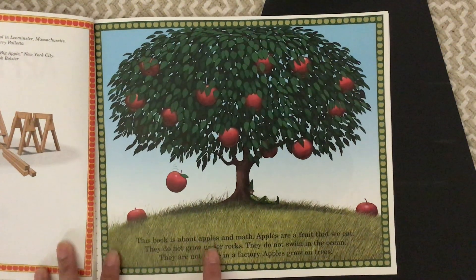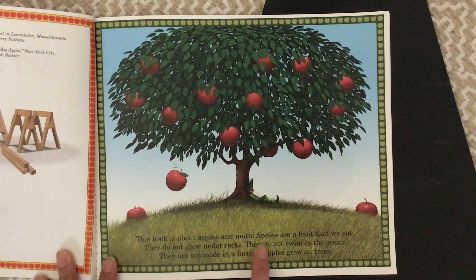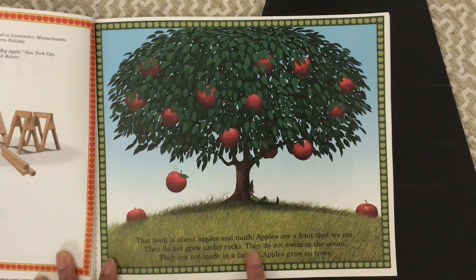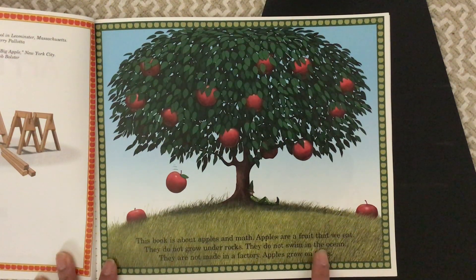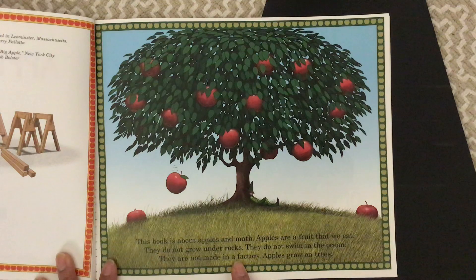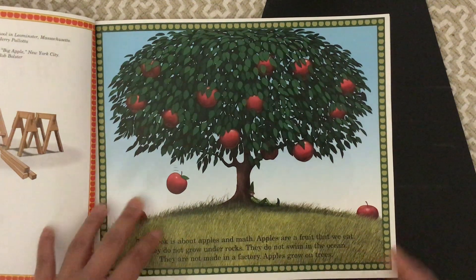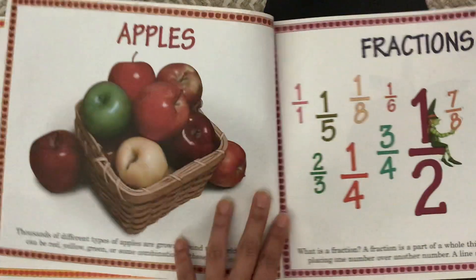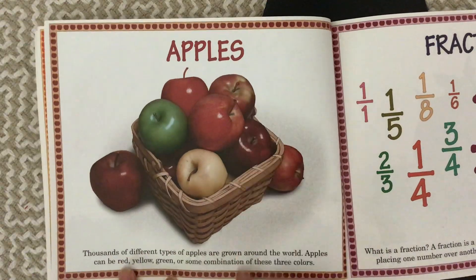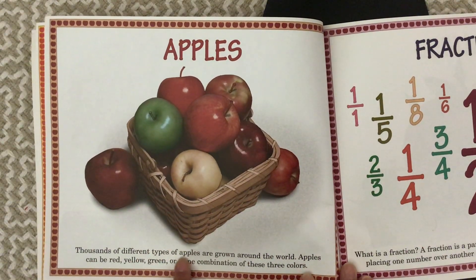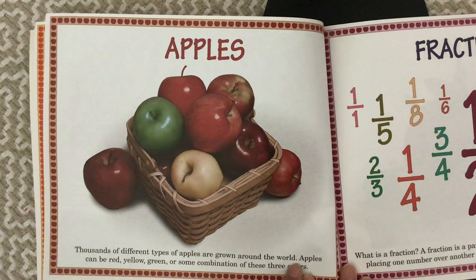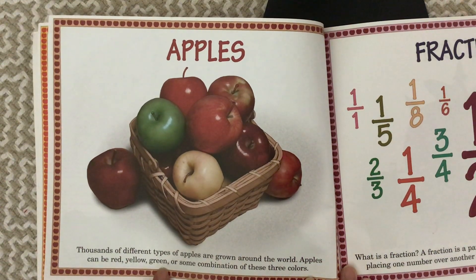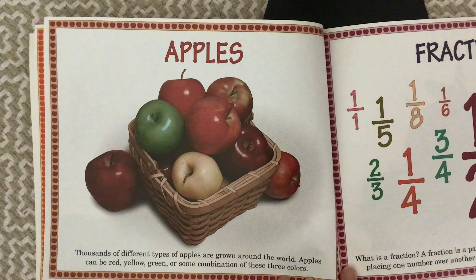This book is about apples and math. Apples are a fruit that we eat. They do not grow under rocks. They do not swim in the ocean. They are not made in a factory. Apples grow on trees. Thousands of different types of apples are grown around the world. Apples can be red, yellow, green, or some combination of these colors.